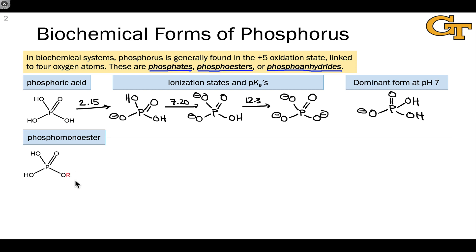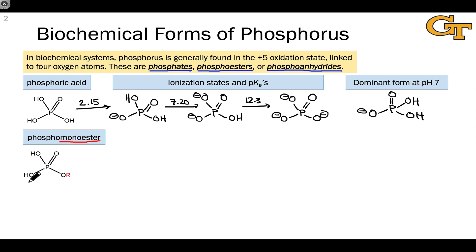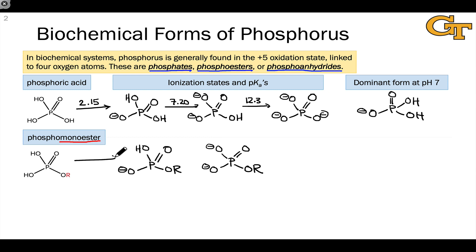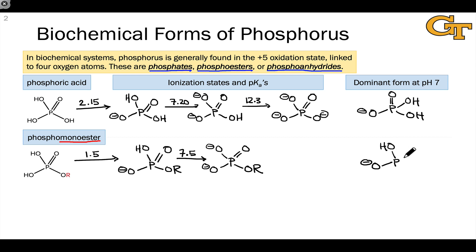When we replace one of the hydroxyl groups with an organic group R, we get a phosphomonoester — the term ester evoking a carboxylic acid ester with a P=O double bond and an OR group. Phosphomonoesters only have two ionization states: a negative one charge and a negative two charge. A typical first pKa is around 1.5 and a typical second pKa is around 7.5. Similar to phosphoric acid, the dominant ionization state at pH 7 is the monoanionic form with an overall charge of negative one.